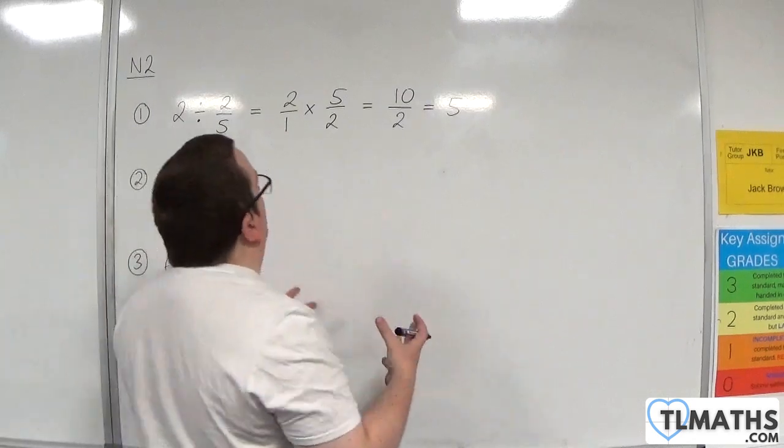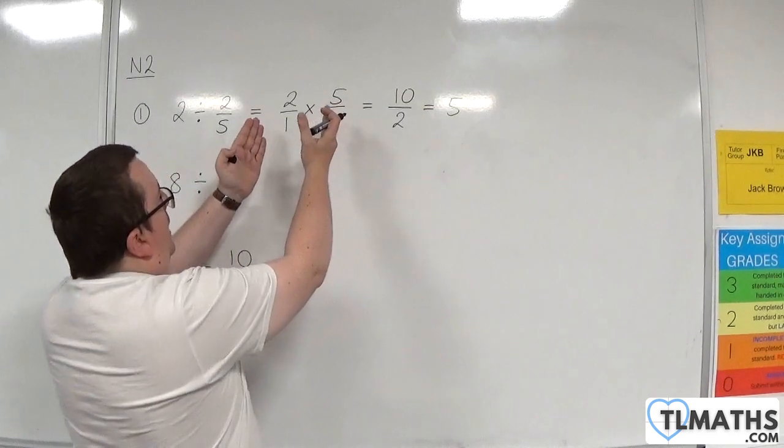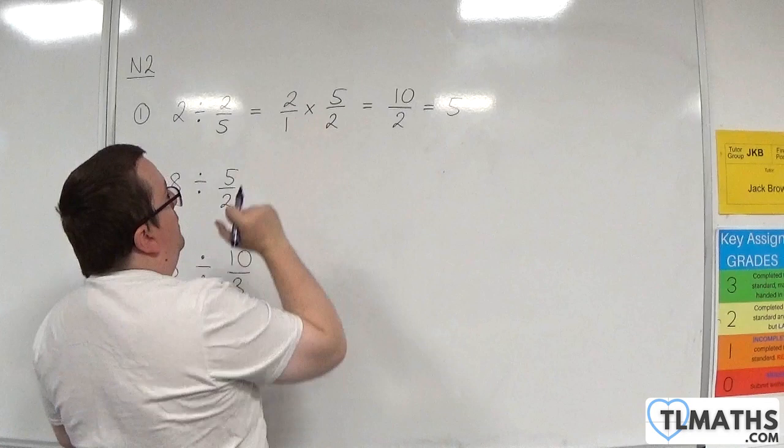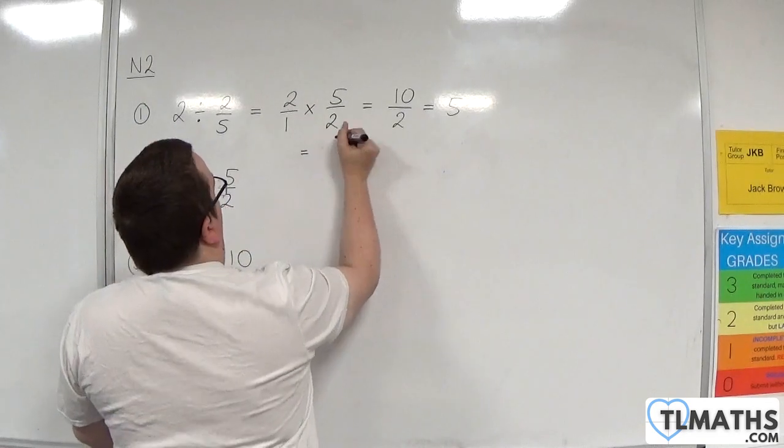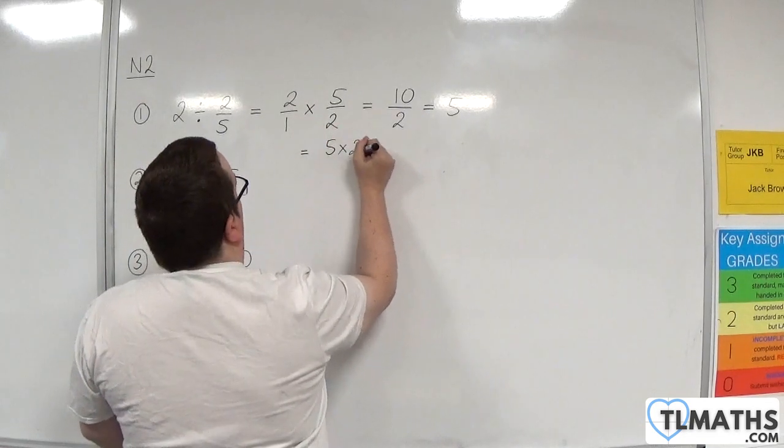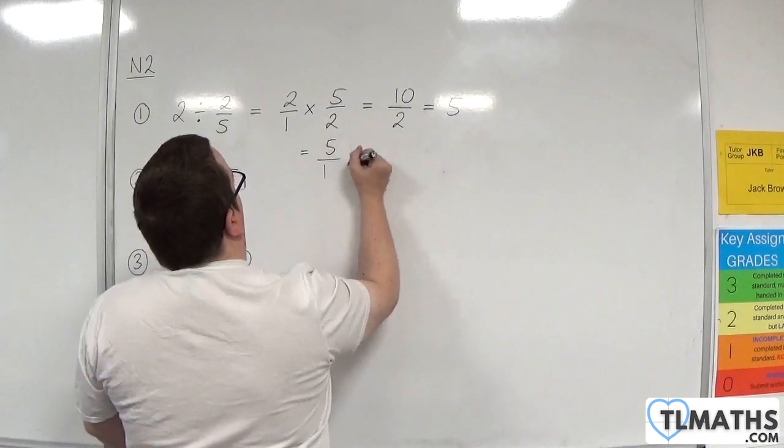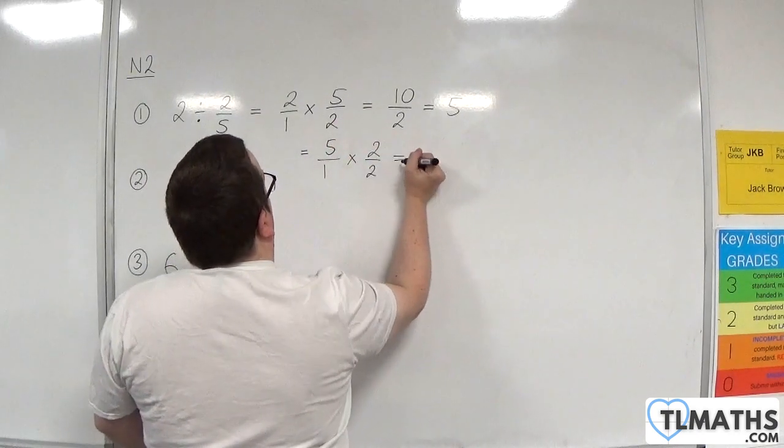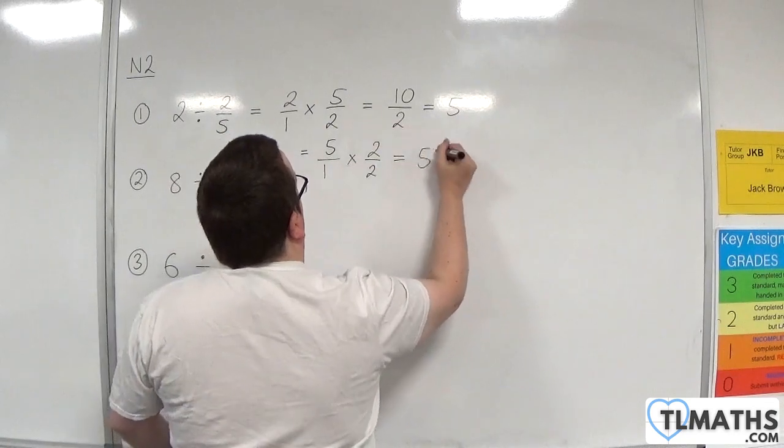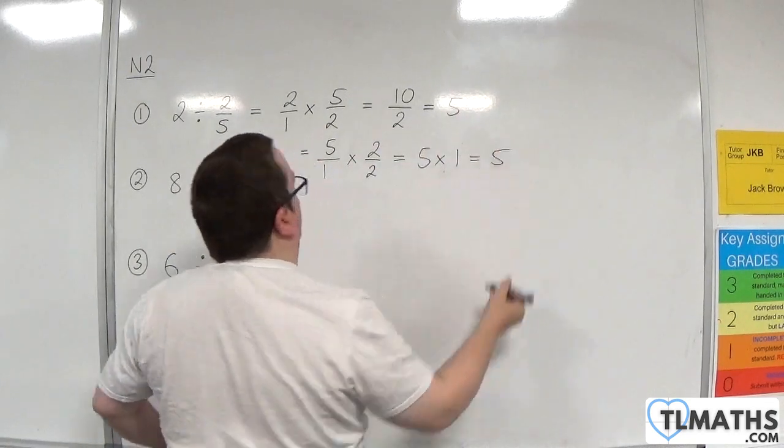Now, you could have swapped the 2 and the 5 at that stage and written that as 5 over 1 times 2 over 2. And of course, that's 5 times 1, which is 5.